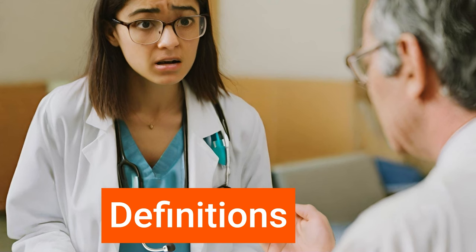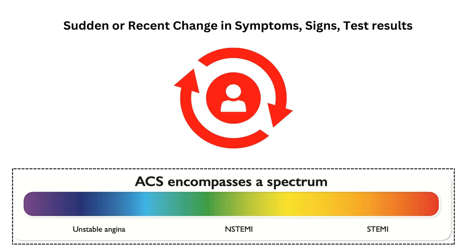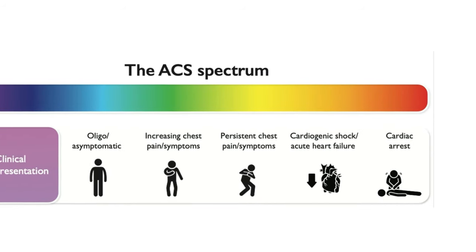What is the difference between unstable angina, acute coronary syndromes, and acute MI? Acute coronary syndromes encompass a spectrum of conditions with a common feature: a sudden or recent change in clinical symptoms or signs. This can happen with or without ECG changes and with or without elevation of cardiac biomarkers or troponin. Patients presenting with suspected ACS may eventually receive a diagnosis of unstable angina or acute myocardial infarction.